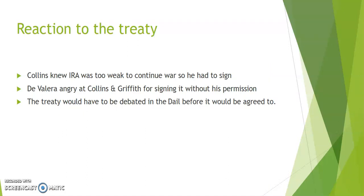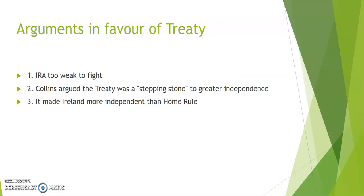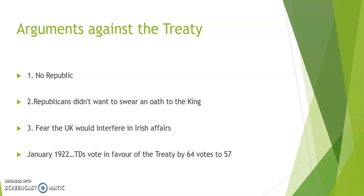The reaction to the treaty was controversial. It split both Sinn Féin and the IRA down the middle. De Valera was annoyed that Collins and Griffith had not consulted him before signing. The Dáil met to debate the terms and TDs spoke with great passion on both sides. The main arguments in favour were that it gave Ireland more independence than Home Rule would have, that the IRA would be beaten if war restarted, it was the best deal available, and as Collins stated it was a stepping stone to greater independence. Arguments against were that it didn't give Ireland the Republic that people had fought and died for, republicans couldn't swear an oath of loyalty to the King, and Britain could still interfere in Irish affairs as the King remained Head of State.